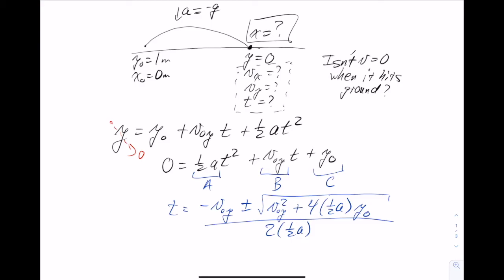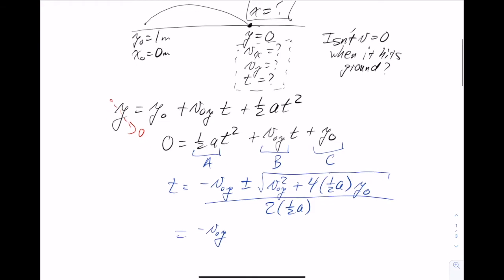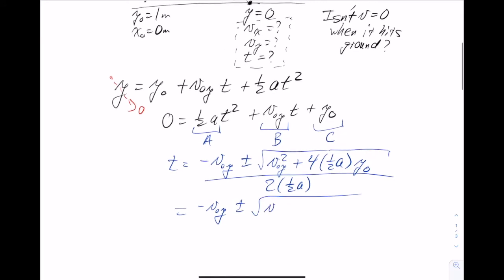Okay, so simplifying that a bit, we've got negative v0y plus or minus the square root of v0y squared, plus 2a y0, all divided by 2a.